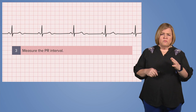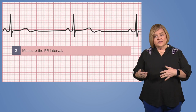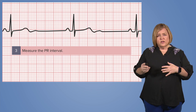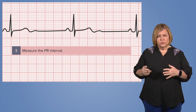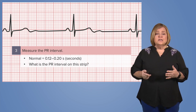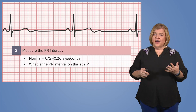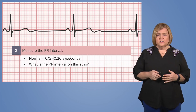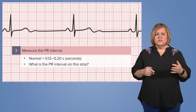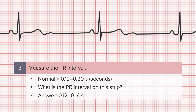Next, measure the PR interval. We have a P wave for every QRS, so you want to measure that PR interval to make sure it's within the normal range. A normal range for PR is 0.12 to 0.20 seconds, or 3 to 5 small squares on ECG paper. Take the time to measure it using the small boxes and compare your answer with what you see on the screen.